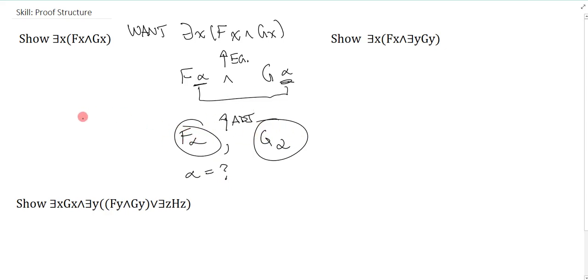And this really helps because if suddenly on the board, let's say down here I got like F of a, then I would know that a really smart show line is to show G of a. Because if I got G of a, then they are the same and I would be able to existentially generalize.